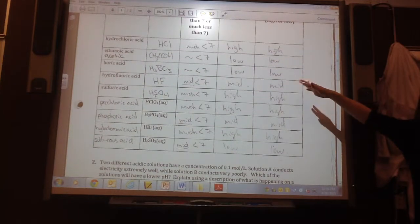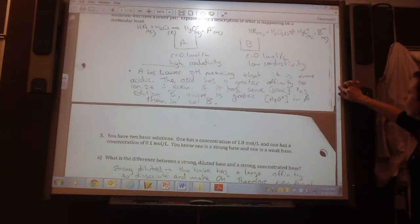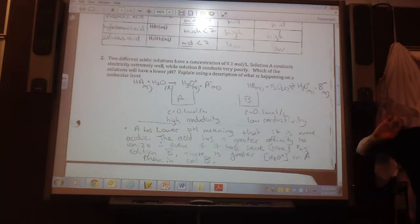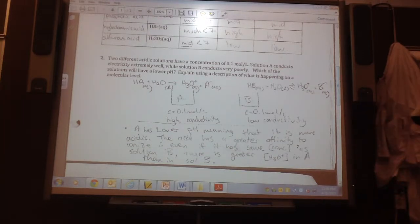So, you can pause and read that, talking to Robin. Okay, so, number two, you're given two different acidic acids, they both have the same concentration. One conducts very well, one conducts poorly. Which one will have a lower pH? Explain.